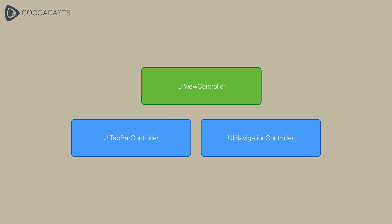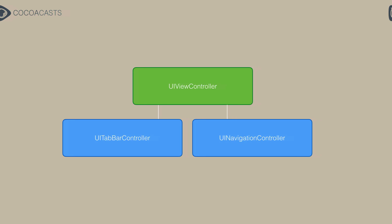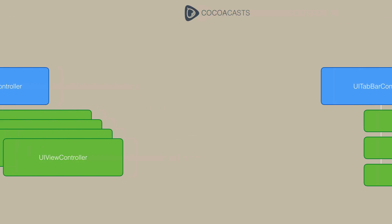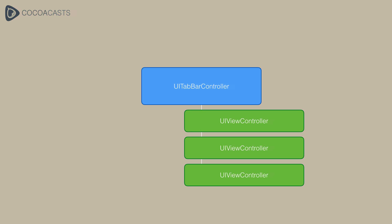What do these classes have in common? Both classes allow you to insert custom content in the form of one or more view controllers. A navigation controller manages a stack of view controllers — you can push and pop view controllers onto and from a navigation stack. The same is true for a tab bar controller: it manages an ordered list of view controllers accessible through a tab bar at the bottom.